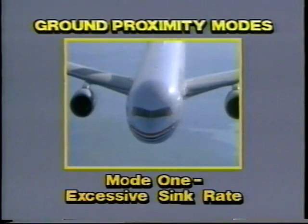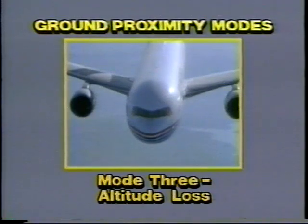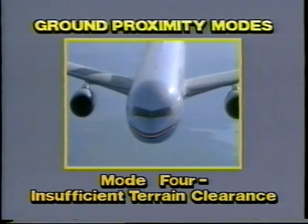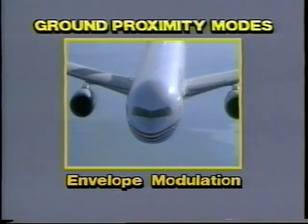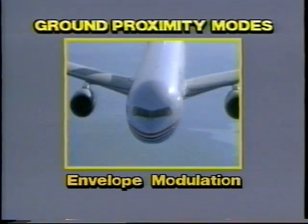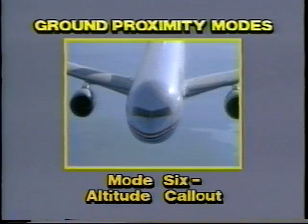Mode one is excessive sink rate. Mode two is excessive closure rate with respect to rising terrain. Mode three is altitude loss during ascent. Mode four is unsafe or insufficient terrain clearance when not in a landing configuration. Mode five is excessive glide slope deviation. Envelope modulation modifies specific mode envelopes to prevent nuisance messages at airports with unusual terrain features. Mode six has two sub modes: decision height alerting and altitude call out, which enunciates specified radio altitudes before touchdown. Both are airline options.